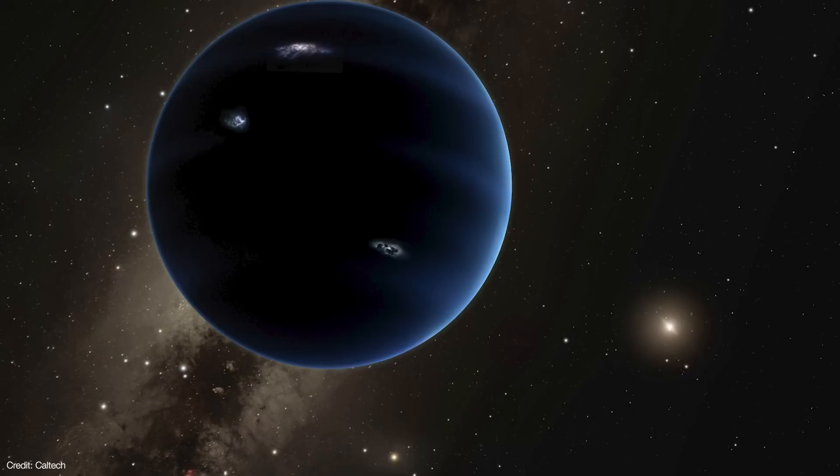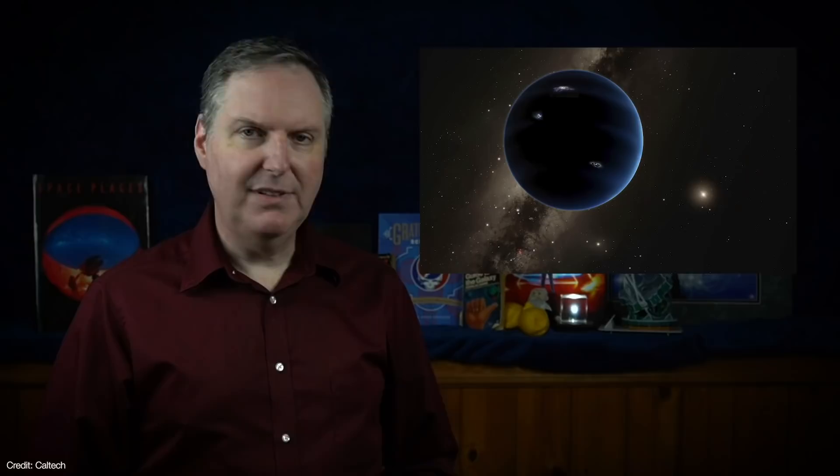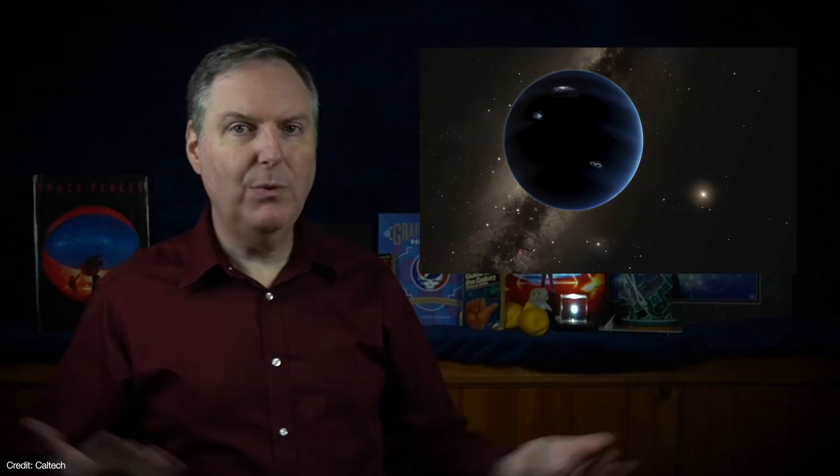This new object was dubbed Planet 9 and astronomers have been searching for it ever since. Obviously they haven't found it yet. But that's not entirely surprising because Planet 9 would have to have an average distance of between 300 to 500 astronomical units from the Sun.